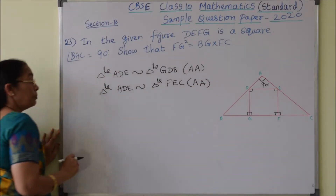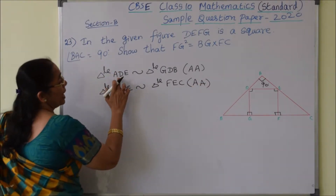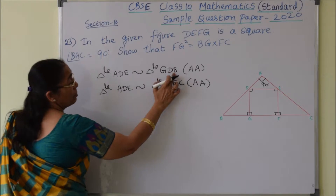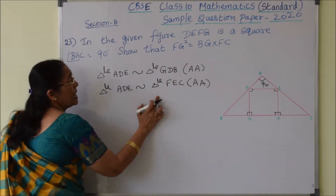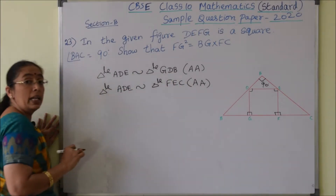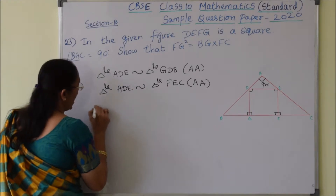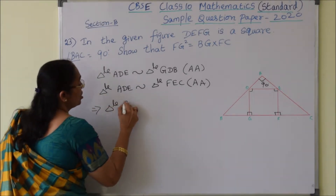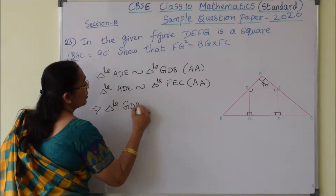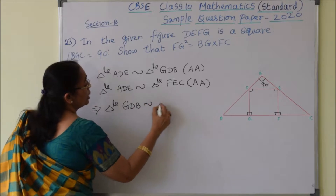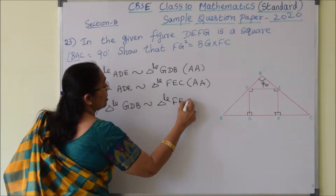So ADE is similar to GDB, and triangle ADE is similar to triangle FEC, which implies triangle GDB is similar to triangle FEC.